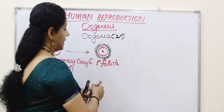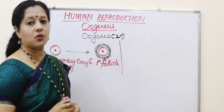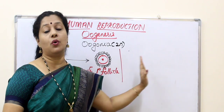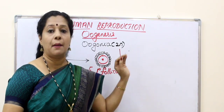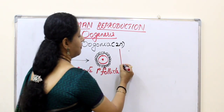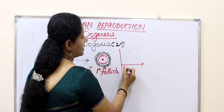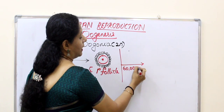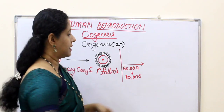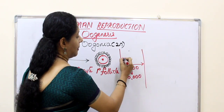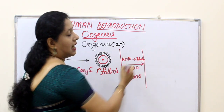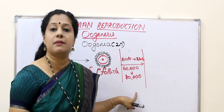Here is the phase where the baby girl is born. Once a baby girl is born, till she reaches puberty, no more oogonia will be added. But many of these primary follicles will degenerate, and when she reaches puberty only 60,000 to 80,000 follicles will be left in her ovaries. This stage spans from birth till her puberty.